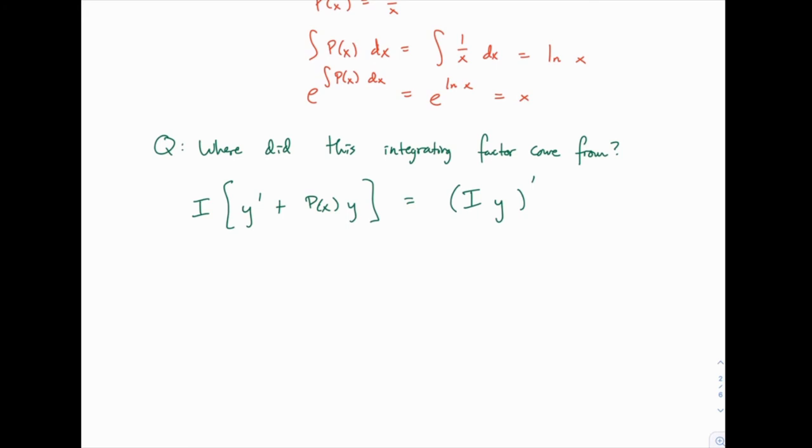If you distribute on the left side, you have i times y prime plus i times p times y. On the right side, we can expand that out using the product rule. So we'd have i times y prime plus i prime times y.